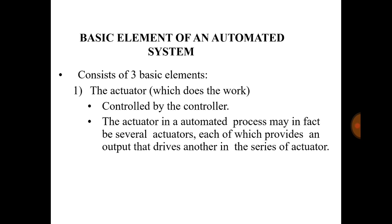The very first element is the actuator. Actuators are the components which do the work, and they are controlled by the controller. In an automated process there may in fact be several actuators, each of which provides an output that drives another in a series of actuators. Basically, an actuator can be a motor that does the work, or it may be a drive.